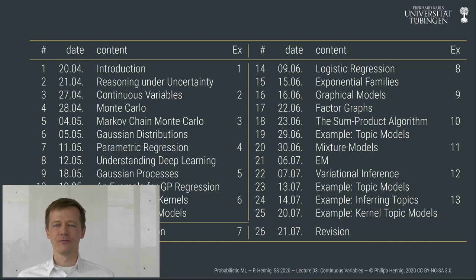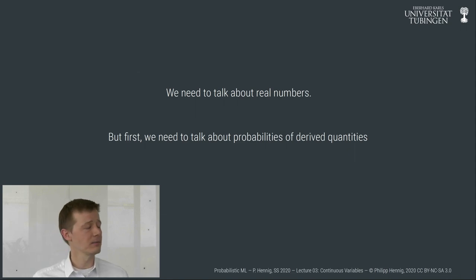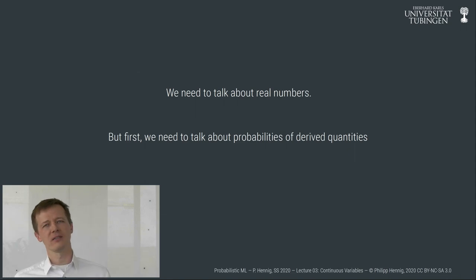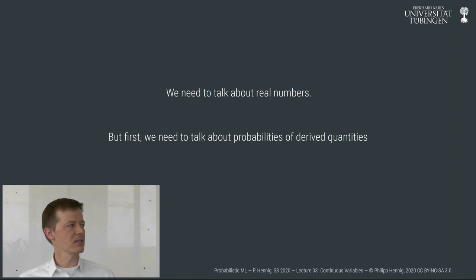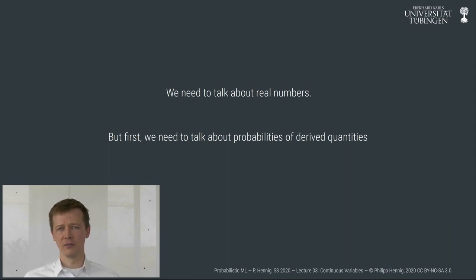That first part — fixing our machinery — consists of two things I've so far left out and haven't talked about at all in previous lectures. The way I've introduced probabilities makes it hard to talk about certain kinds of variables: continuous variables and derived variables. We will start with the derived variables.